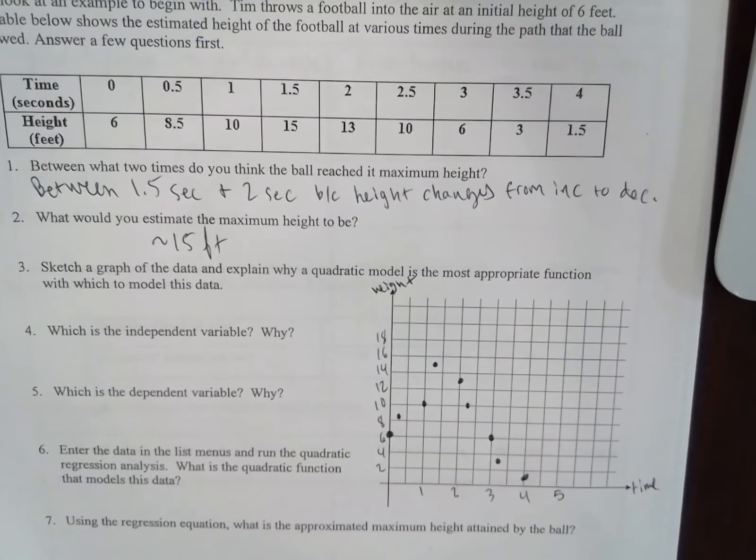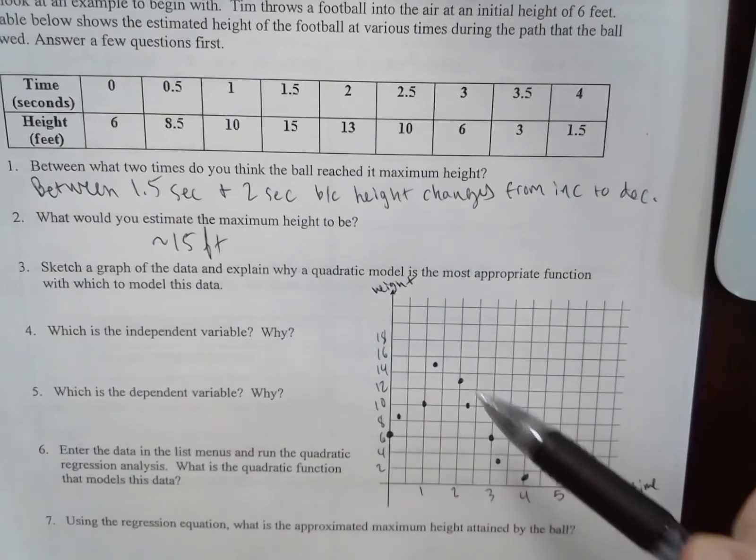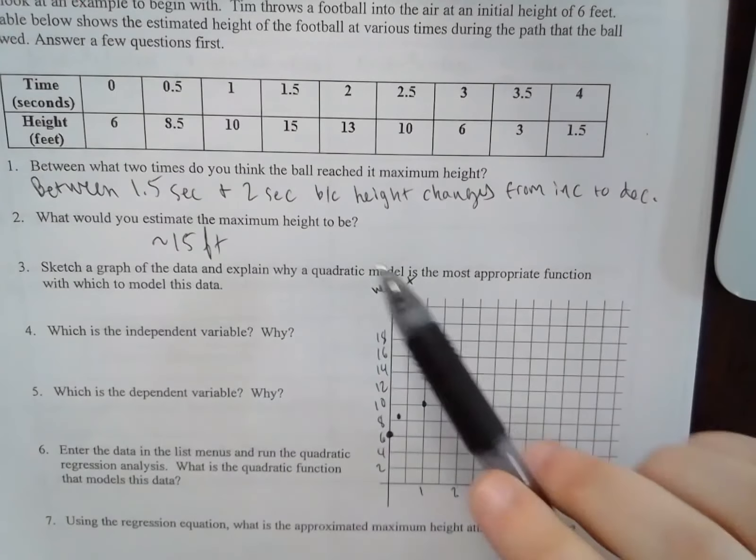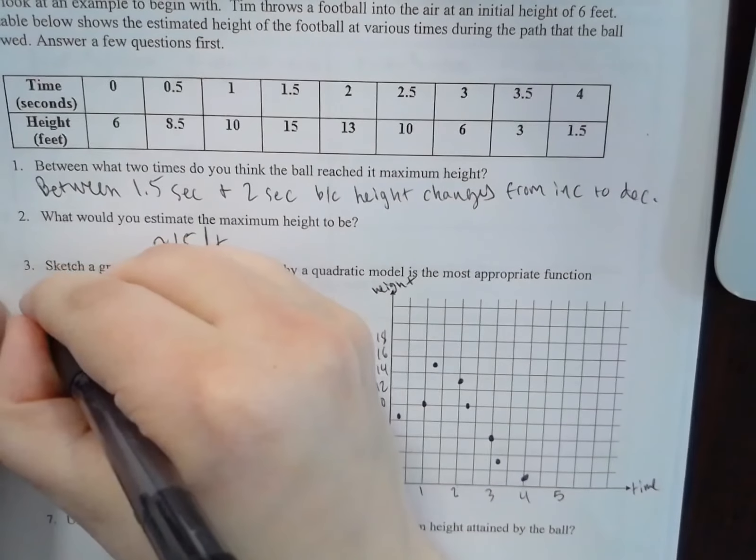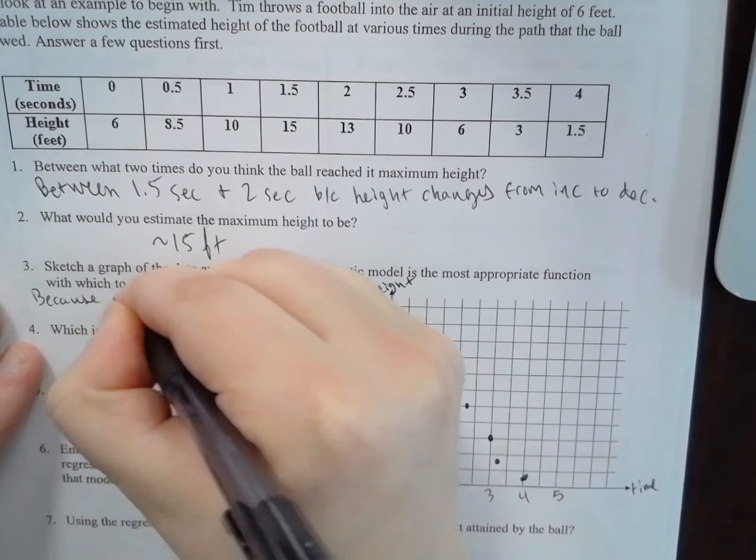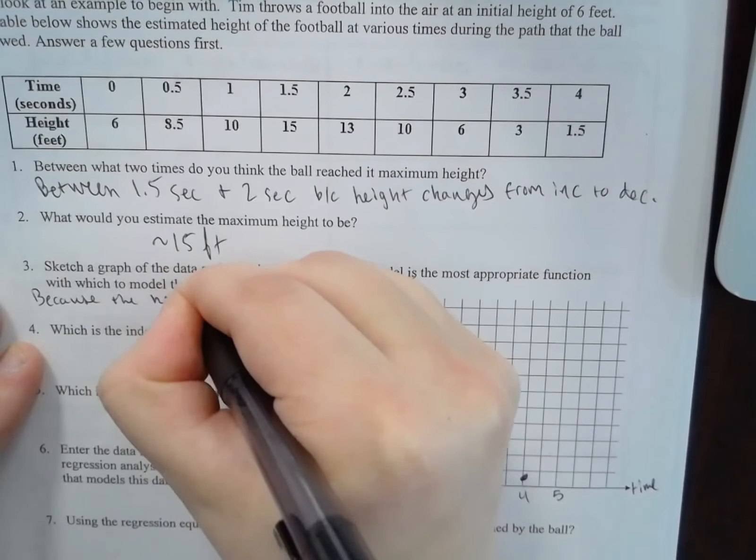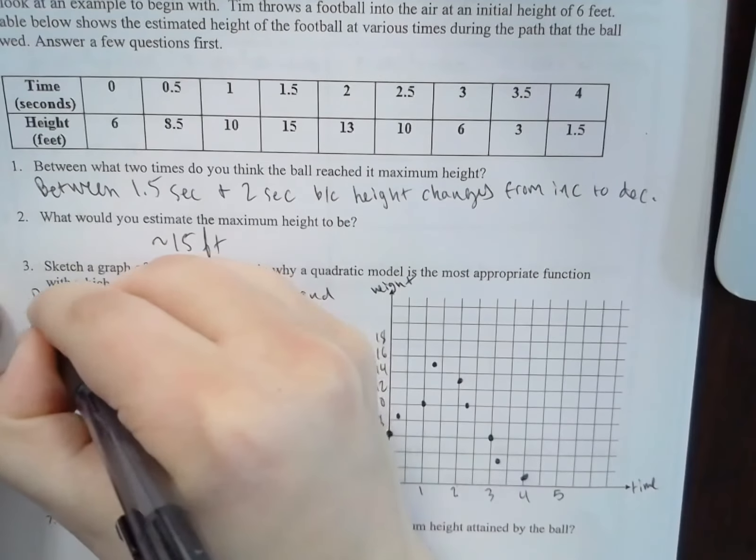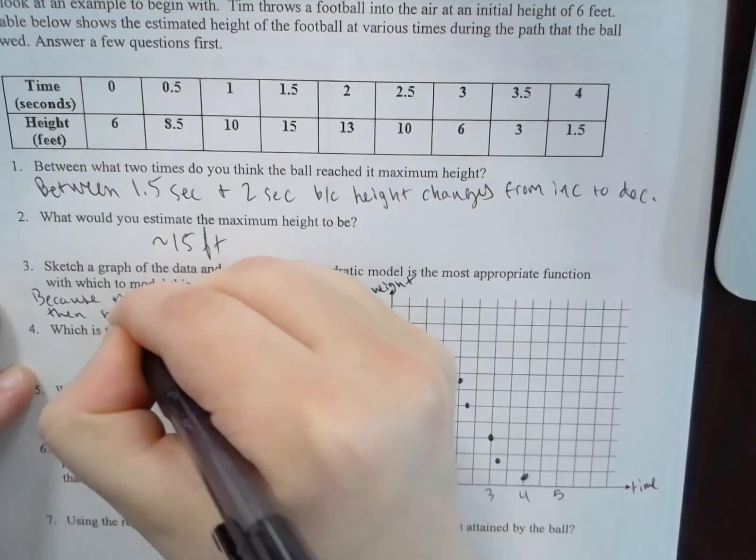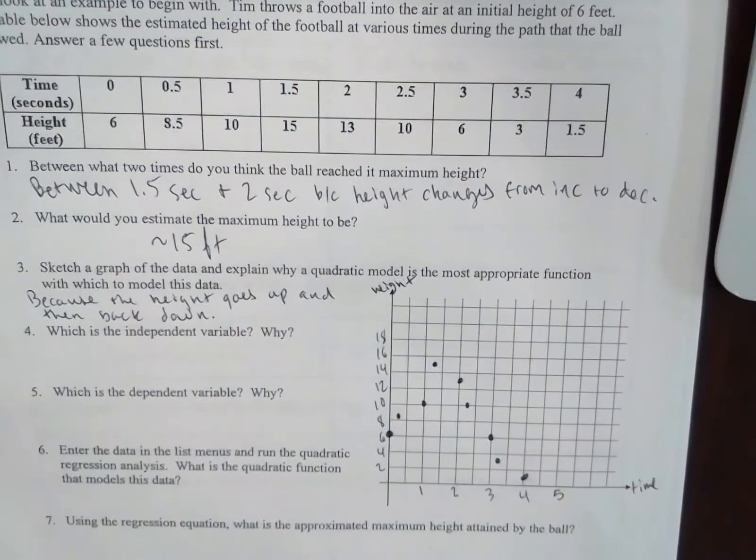So you can see that this is like almost a parabola. It is definitely not linear because it goes up and then it comes back down. So why is a quadratic model the best? Because the height goes up and then back down. Which is the independent variable, which is the dependent variable?